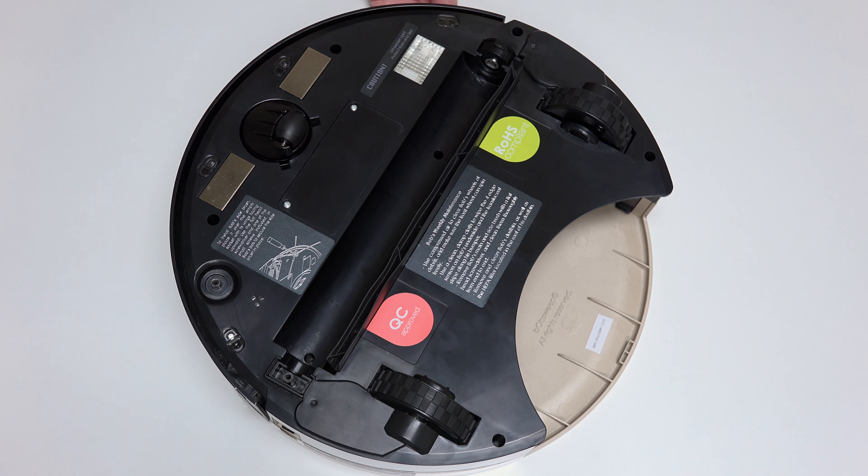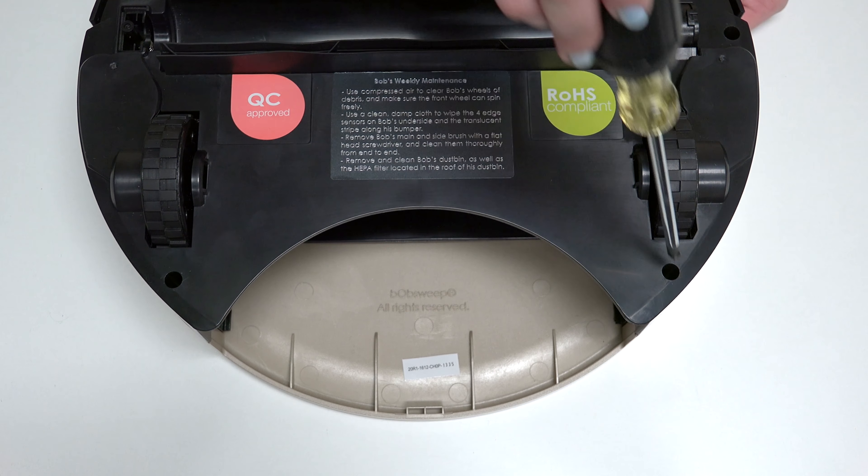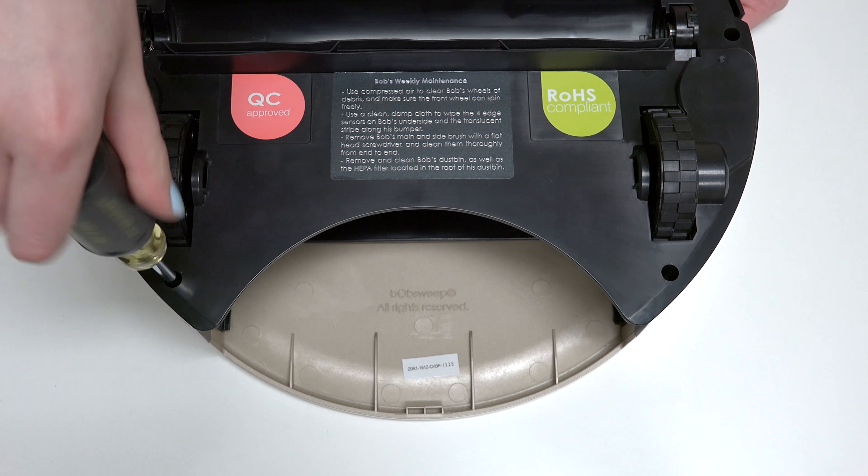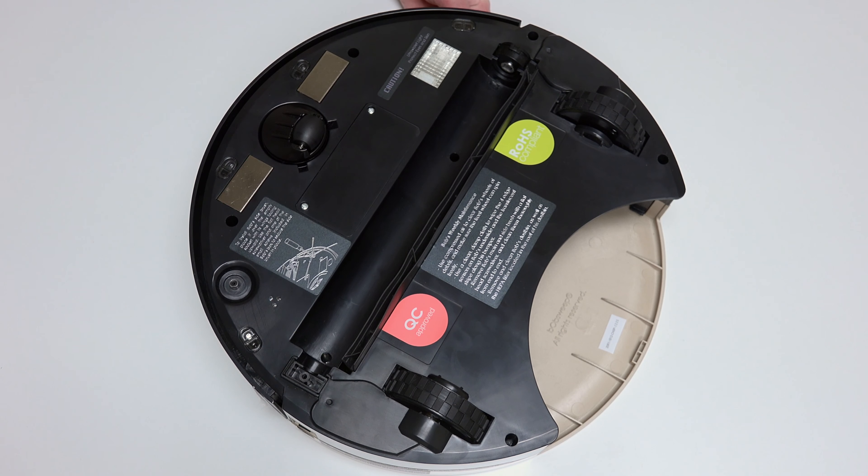One screw to the right of the main brush motor. One screw on each side of the dustbin. The final two screws are in the brush compartment.